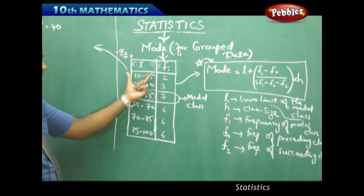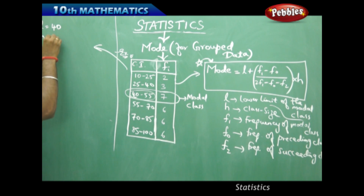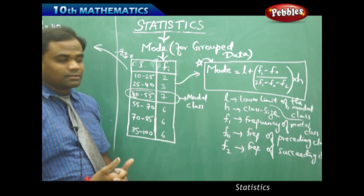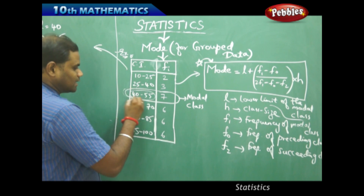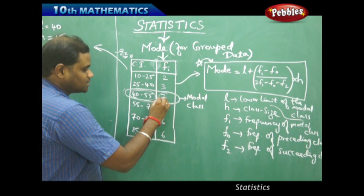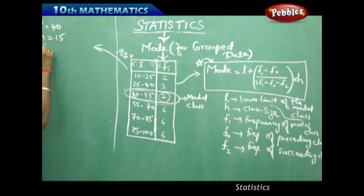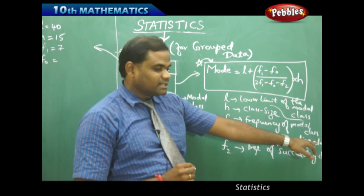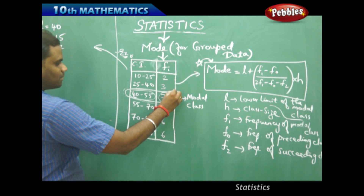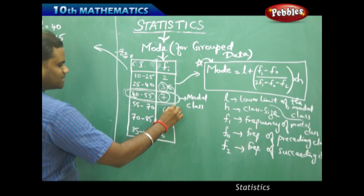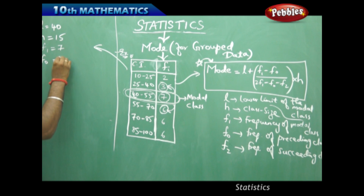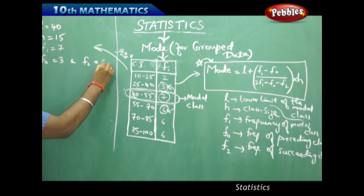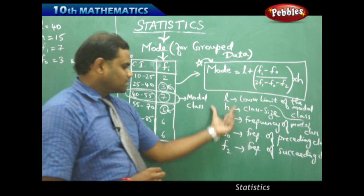F1, the frequency of the modal class in the third row, is 7. F0, the frequency of the preceding class above the modal class, is 3. F2, the frequency of the succeeding class below the modal class, is 6. Therefore, F0 is 3 and F2 is 6. This is how we extract the values using the definitions in the formula.